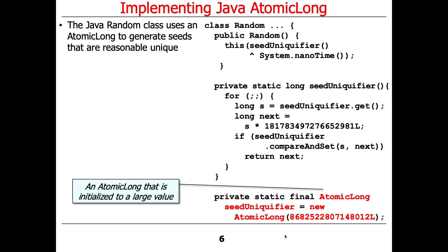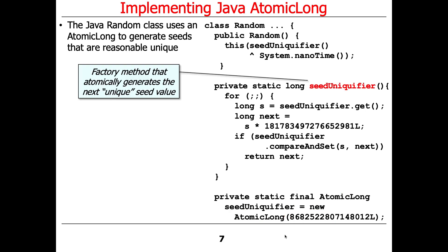Before looking at the seedUniquifier method, let's look at the seedUniquifier field. This is one of those situations where they gave the same name to a field and a method — I would not write code like that. That's why you use an 'm' prefix, so you can distinguish those things at a glance. Down here we have an atomic long called seedUniquifier initialized to a very large number starting with 8. The seedUniquifier method is a factory method that will atomically generate the next unique seed value.